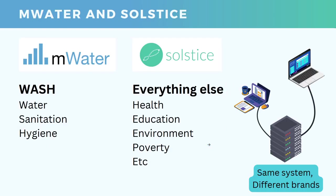We often get asked: what's the difference between mWater and Solstice? We often talk about the two somewhat interchangeably. Basically, they are the same system, but with different brands on top — they talk to the same database and the same server. If you create a login in mWater, you can use it in Solstice and vice versa. mWater is recommended for water, sanitation, and hygiene work, and it does prioritize those features a little bit in the interface.